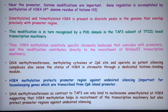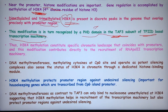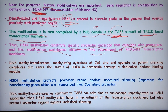Near the promoter, histone modifications are very important. Gene regulation is accomplished by methylation of H3K4, which is critical for gene expression. Dimethylated and trimethylated H3K4 is present in discrete peaks in the genome that overlap precisely with promoter regions. This H3K4 methylation is recognized by the PHD domain of TAF3, a subunit of transcription factor TFIID, which is part of the basal transcription machinery. H3K4 methylation thus constitutes a specific chromatin landscape coinciding with promoters and contributes directly to recruitment of RNA polymerase and the transcription machinery.